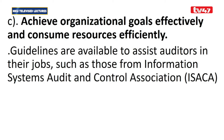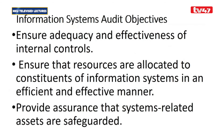The third goal is to achieve organization goals effectively and consume resources efficiently. The goal of IS Audit also includes ensuring guidelines are available to assist auditors from organizations like ISACA — the Information System Audit and Control Association. Key audit objectives include ensuring adequacy and effectiveness of internal controls, ensuring resources are allocated efficiently and effectively, and providing assurance that system-related assets are safeguarded.